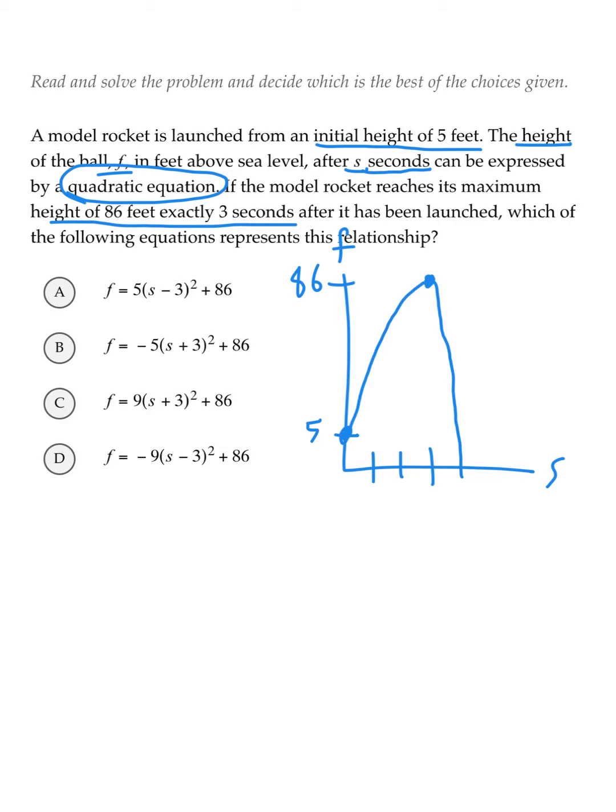Since the question ultimately asks for an equation that represents the relationship of this rocket, let's use an equation of a parabola in standard form. The equation of a parabola in standard form is y equals a(x minus h) squared plus k. This equation is special because it gives us the vertex of the parabola, as long as we know enough information about the parabola.